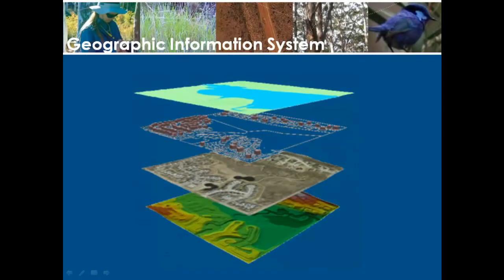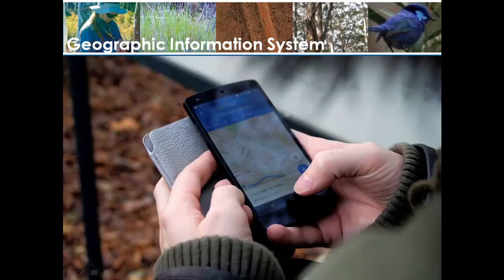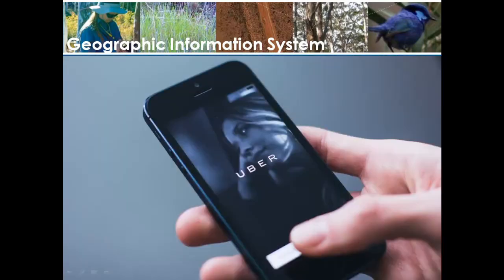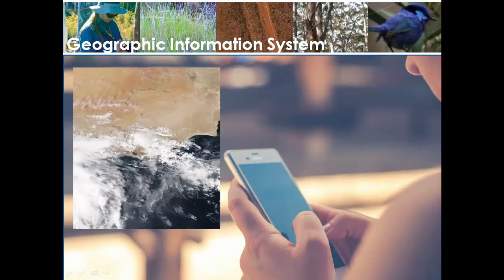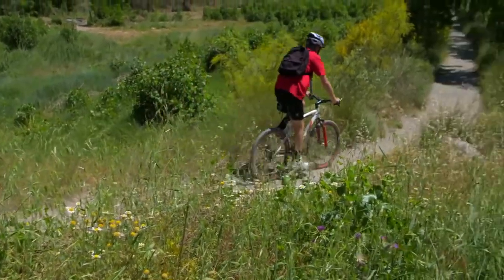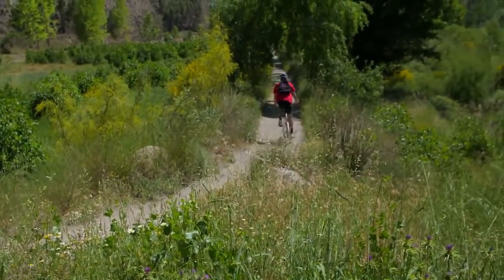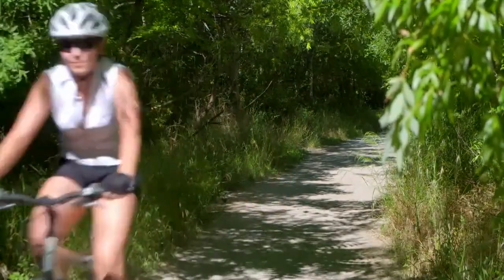GIS stands for geographic information systems and involves taking layers of information and overlaying them to help generate new insights and knowledge about a particular place in our world. If you haven't used a GIS before, you might be surprised to hear that in fact you have. Anytime you whip out your phone to find directions to a shop, book an Uber, or have a look at the weather, you are either indirectly using or benefiting from a GIS application. Mapping technology is so embedded in our daily lives and the services we depend on that we often don't realize and take it for granted.